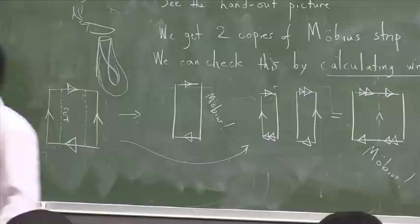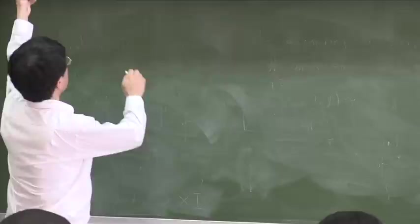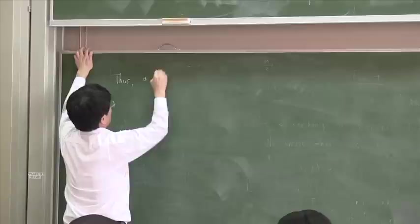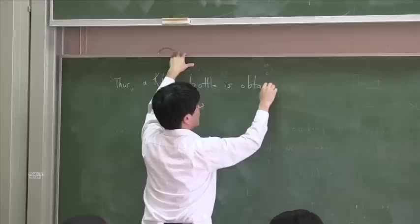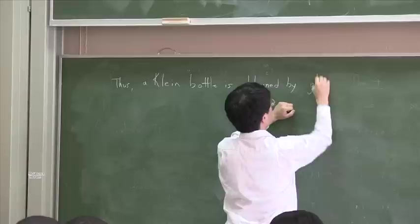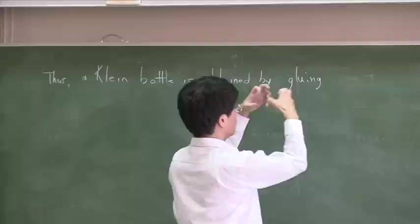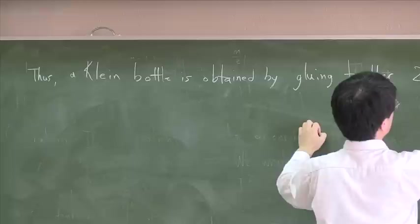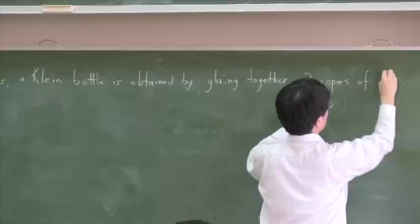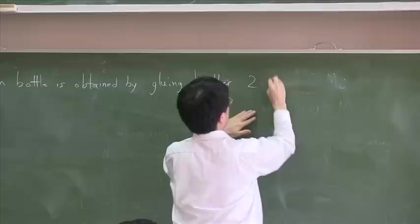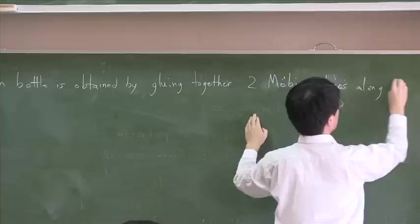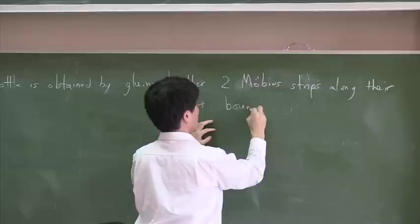So, we have the result that the Klein bottle is obtained by gluing together, gluing along, two Möbius strips along their boundary circles.